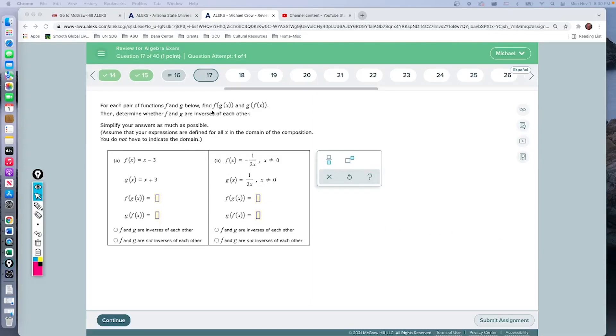Question 17: We're going to use composition of functions to determine whether two functions are inverses of each other. What an inverse is—it means one function that undoes what the other function does. Subtraction and addition are inverses of each other; multiplication and division are inverses. This first one, part A, looks very promising: one function is subtracting three, the other is adding three. Those are inverse operations.